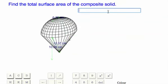And that's it for a composite solid made of a hemisphere and a cone, finding the total surface area. Have a good day.